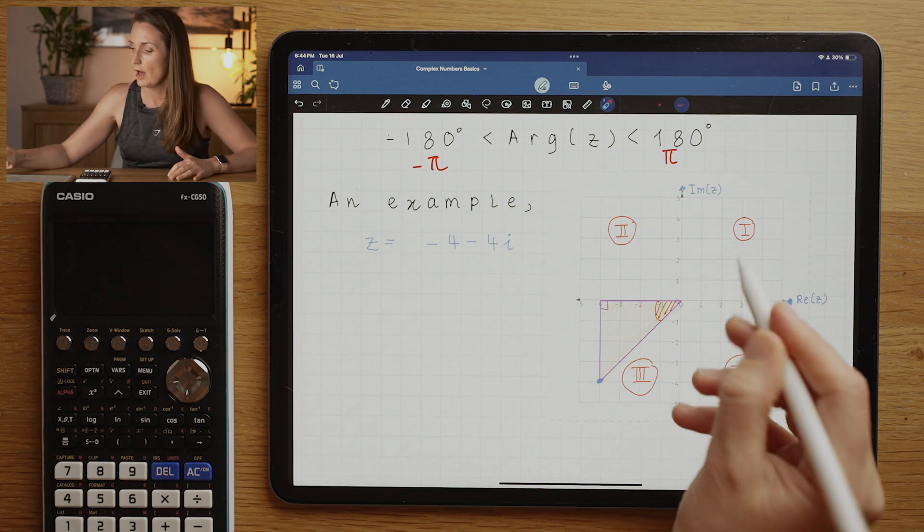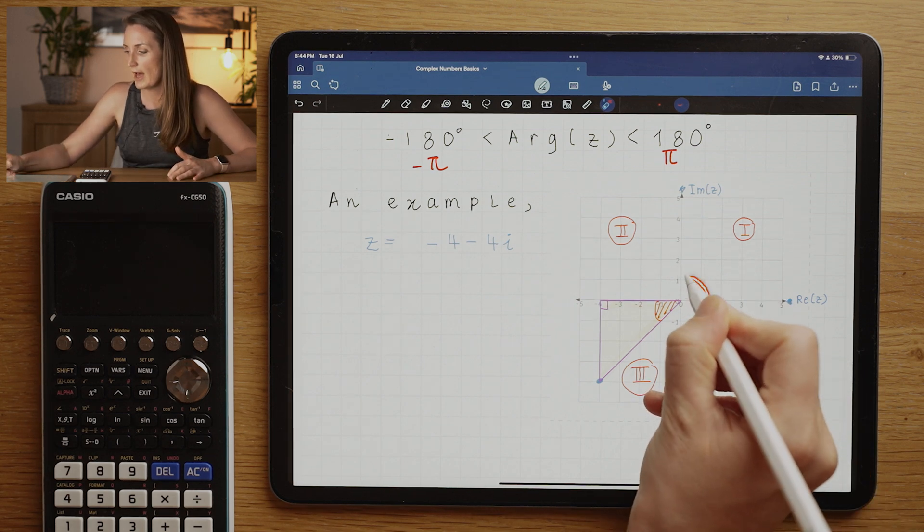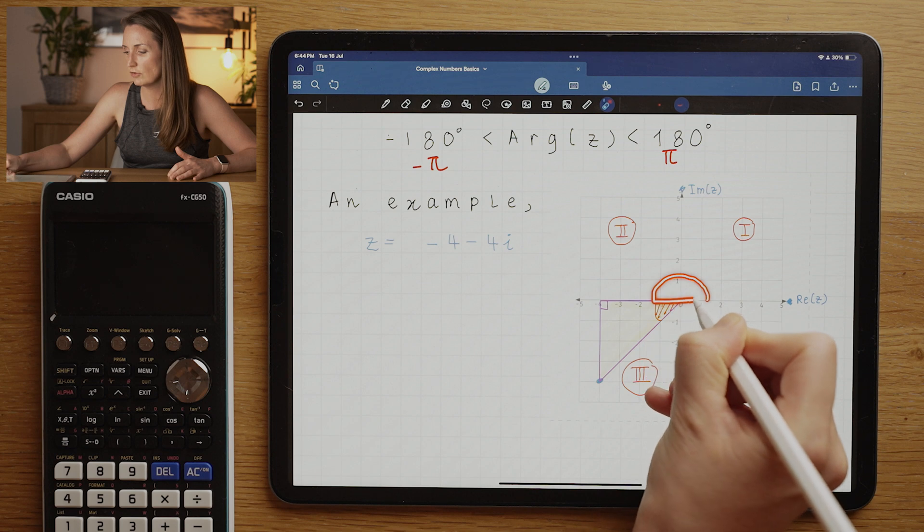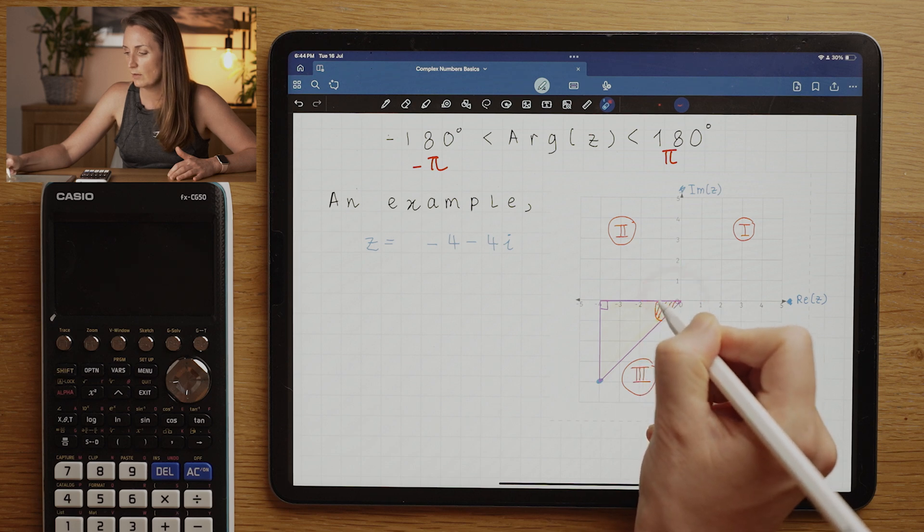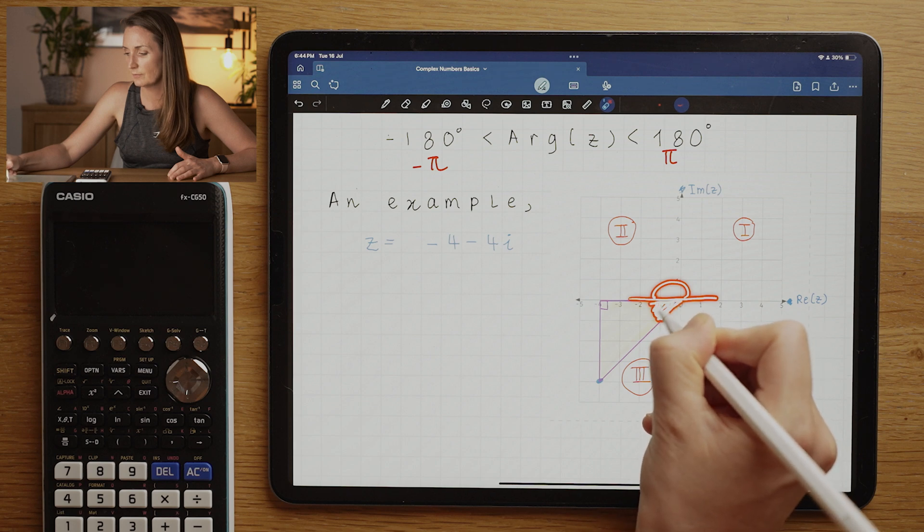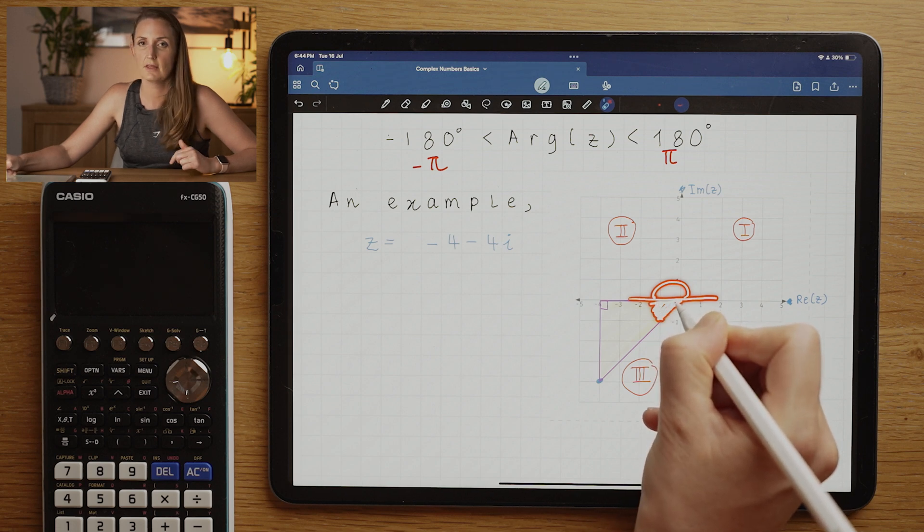So we would be in region three. Now if we go back to what I taught you on the unit circle, I would generally teach you to add 180 degrees or π to that one. We would start here, we would go anti-clockwise until we hit this line.